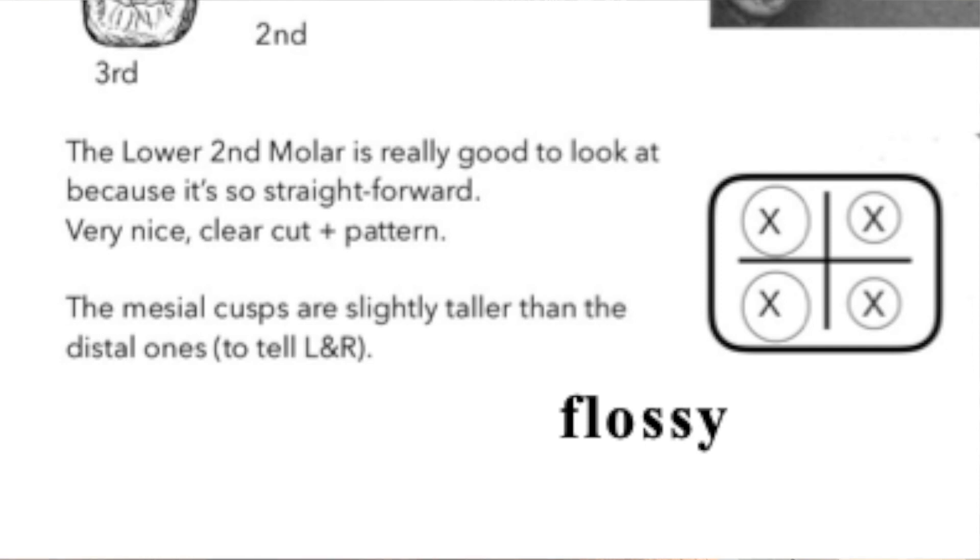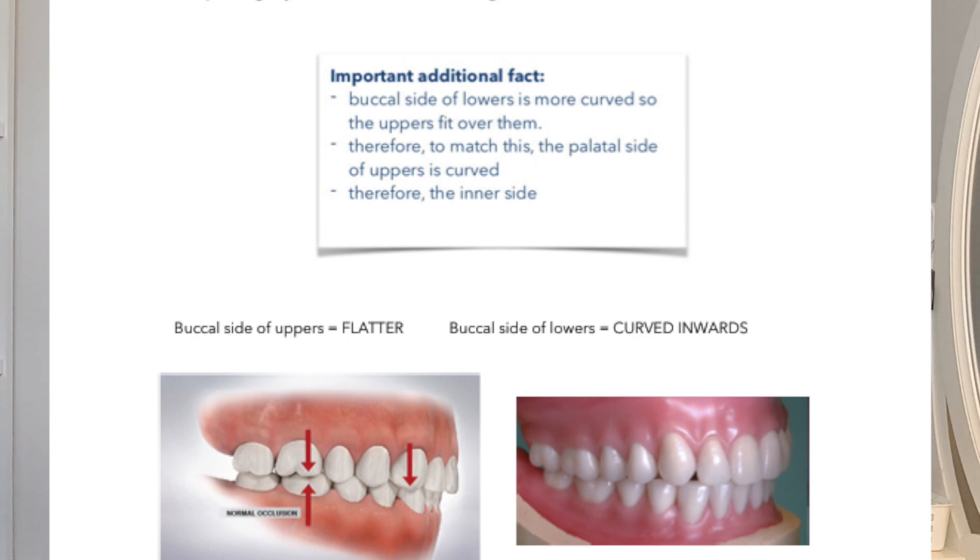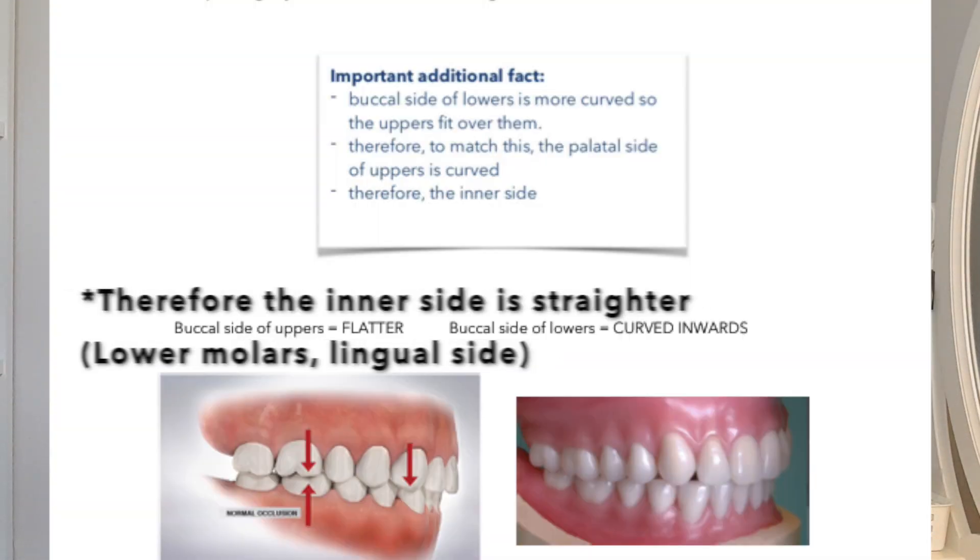Last thing: if you're distinguishing between left and right for lower second molars — and also for the lower first — the mesial cusps are slightly taller than the distal cusps. A couple of extra important additional facts: the buccal side of the lowers is more curved so the uppers fit over them, and therefore to match this, the palatal side of the uppers is curved. There might be a couple of other features I've not mentioned but they're on the revision pack — this is a condensed version of all the notes.